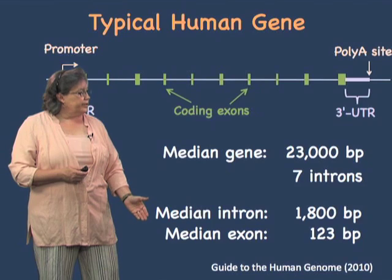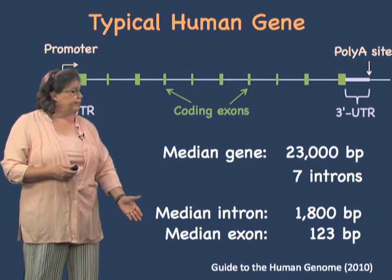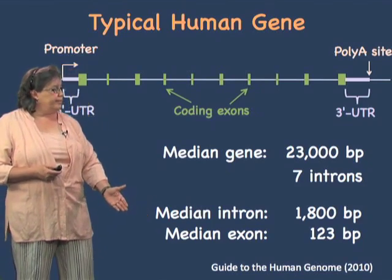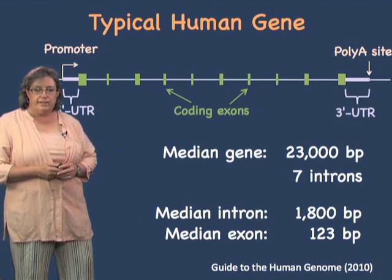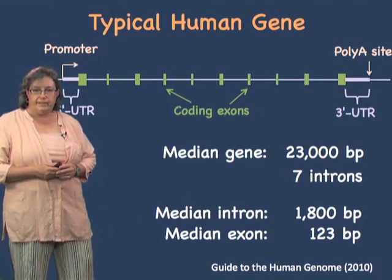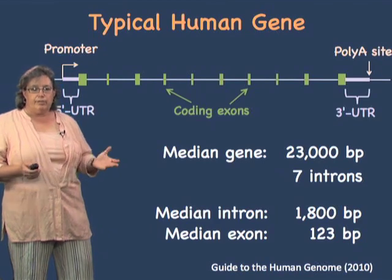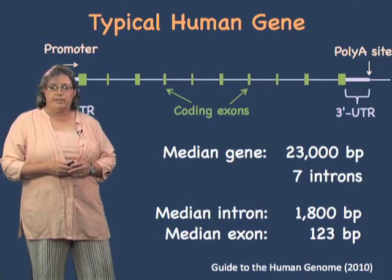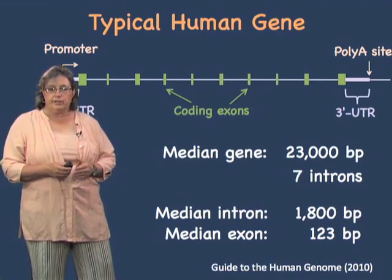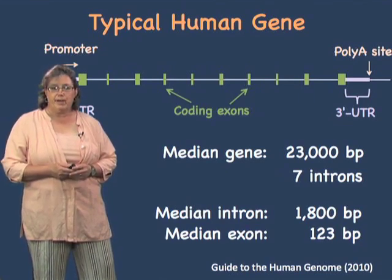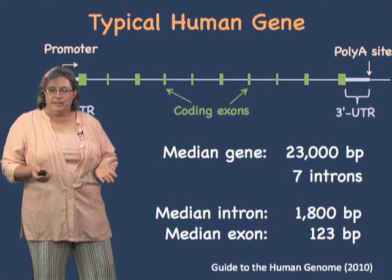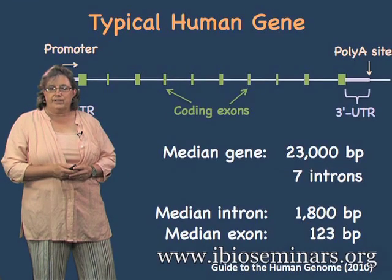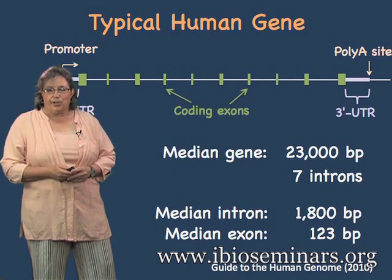The typical human gene has a median intron length of over 10 times that of the exon lengths. That means that whenever a human gene is transcribed, 90 to 95% of the RNA is immediately spliced out and thrown away — and that seems rather wasteful. We'll be talking about why we have these intronic regions and what good they are if we're wasting that much RNA.